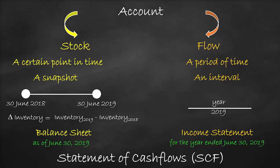The income statement shows what happened to profit during the year; therefore, we do not use the delta symbol, which refers to changes over two years. In order to estimate the statement of cash flows, we need to have one income statement and two balance sheets, such as the income statement of 2019 and the balance sheets of 2019 and 2018.